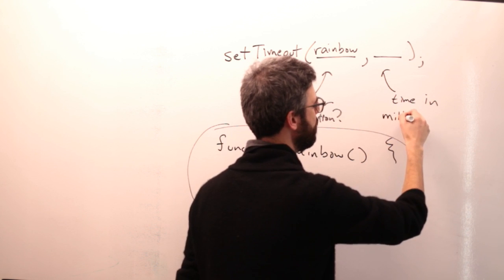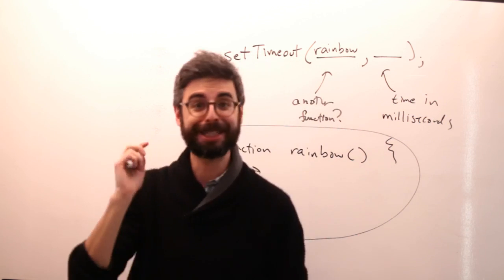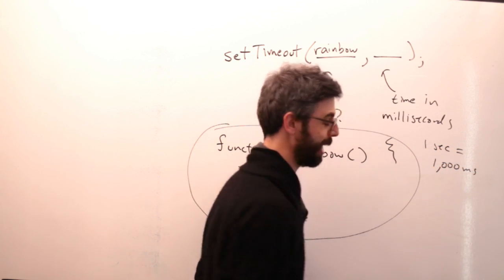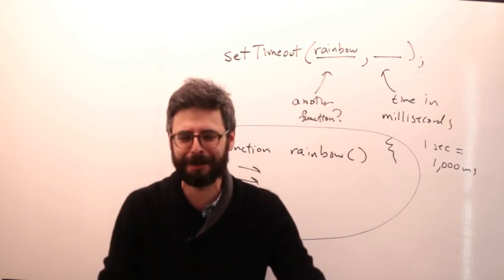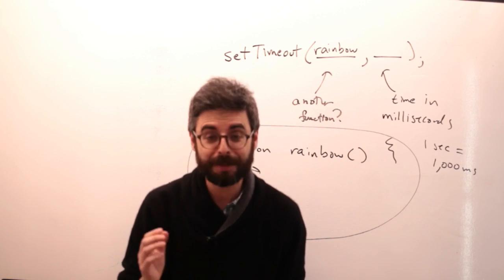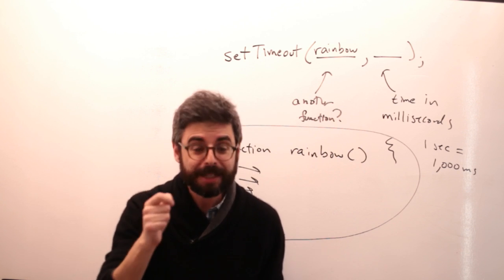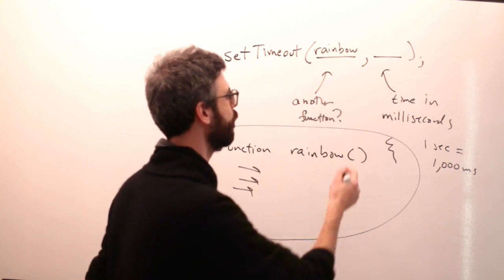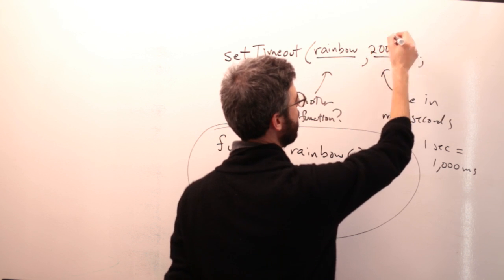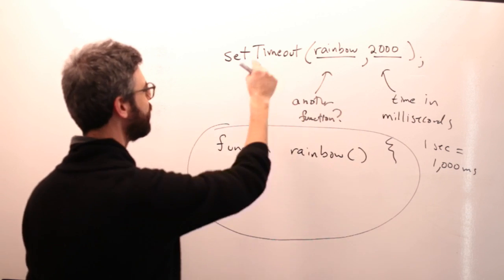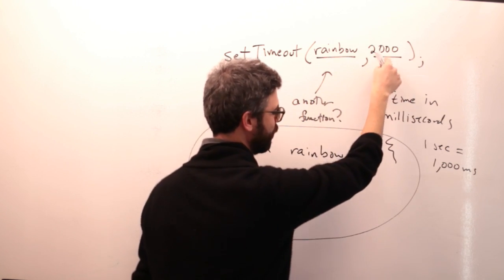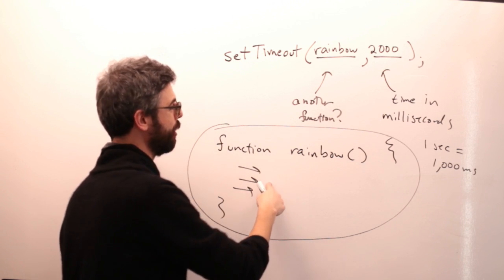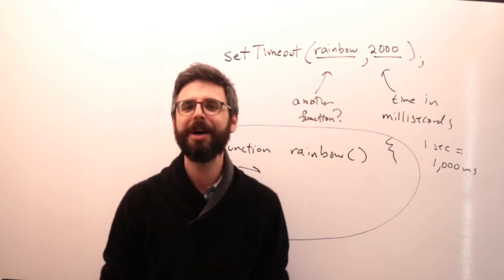The time goes in here in milliseconds. One second equals 1000 milliseconds. So if you want to reference one minute, you'd say 60 seconds or 60,000 milliseconds. So for example, if I put 2000 here as my second argument, that means two seconds. So setTimeout with the rainbow function and 2000 means: I want the code inside the rainbow function to execute two seconds from now.